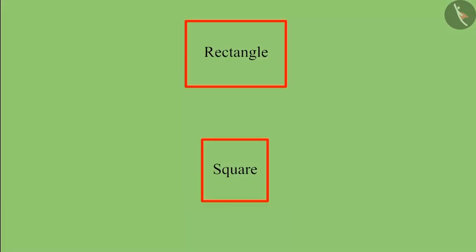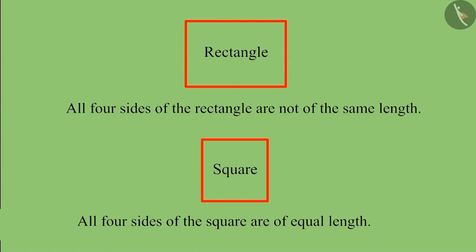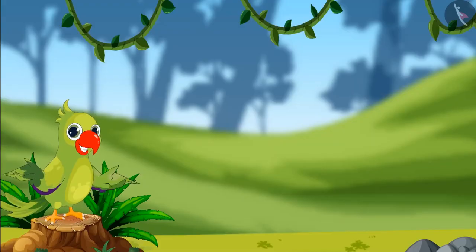So children, now you can also distinguish between square and rectangle, right? Both rectangle and square are made of four sides. But the shape whose four sides are of equal length is called a square. And this is the rectangle.